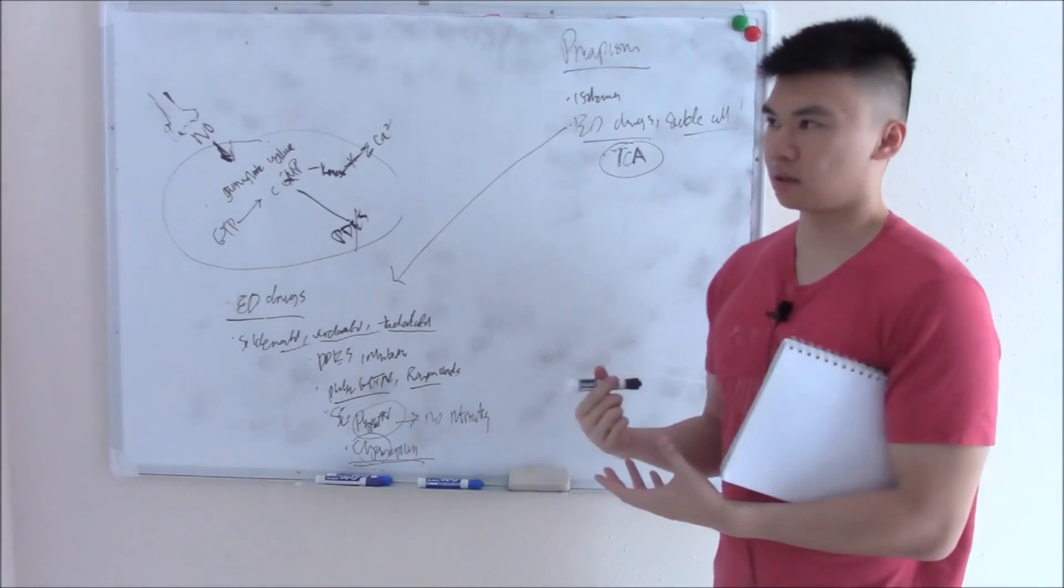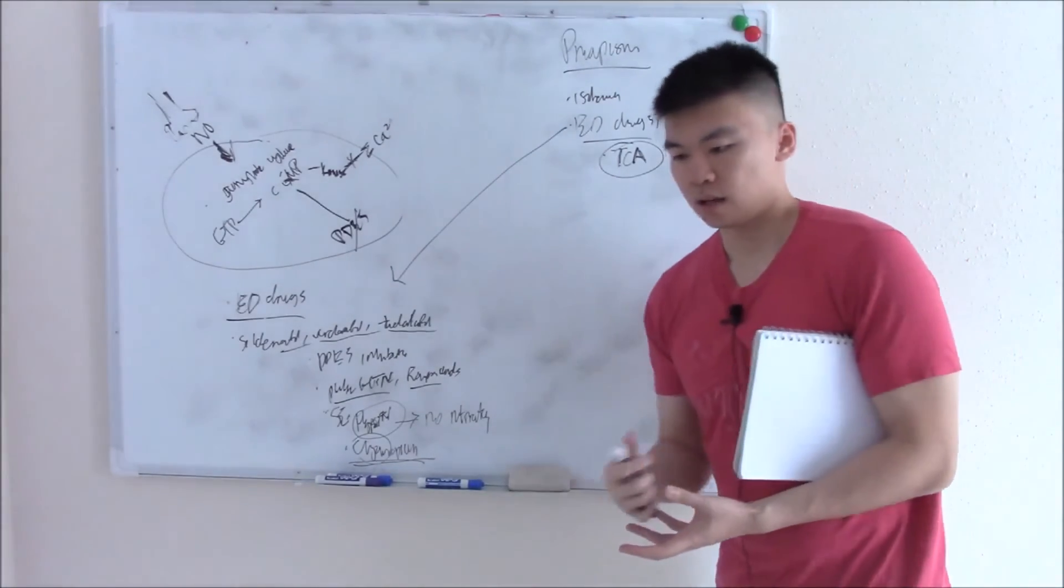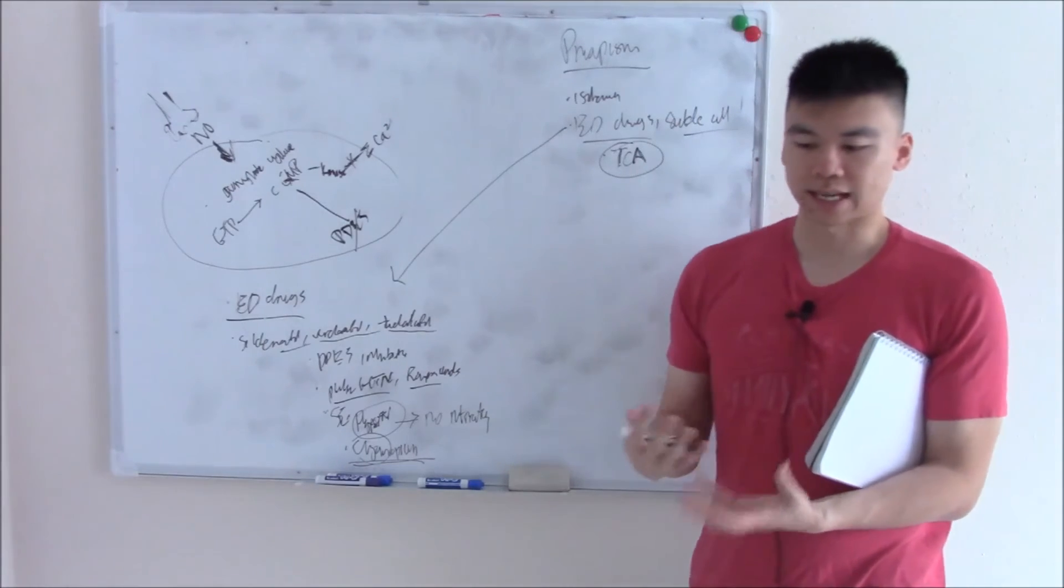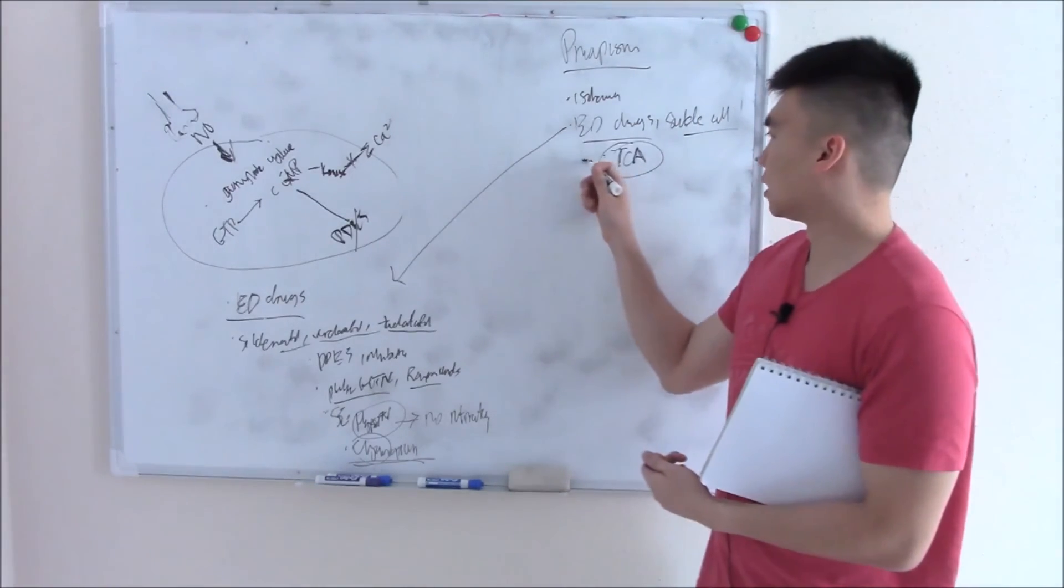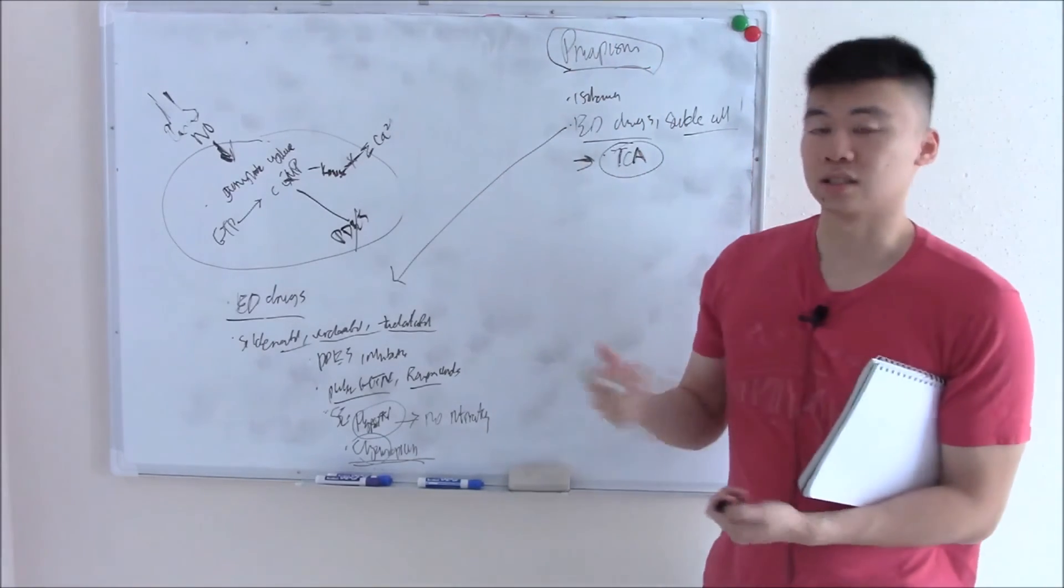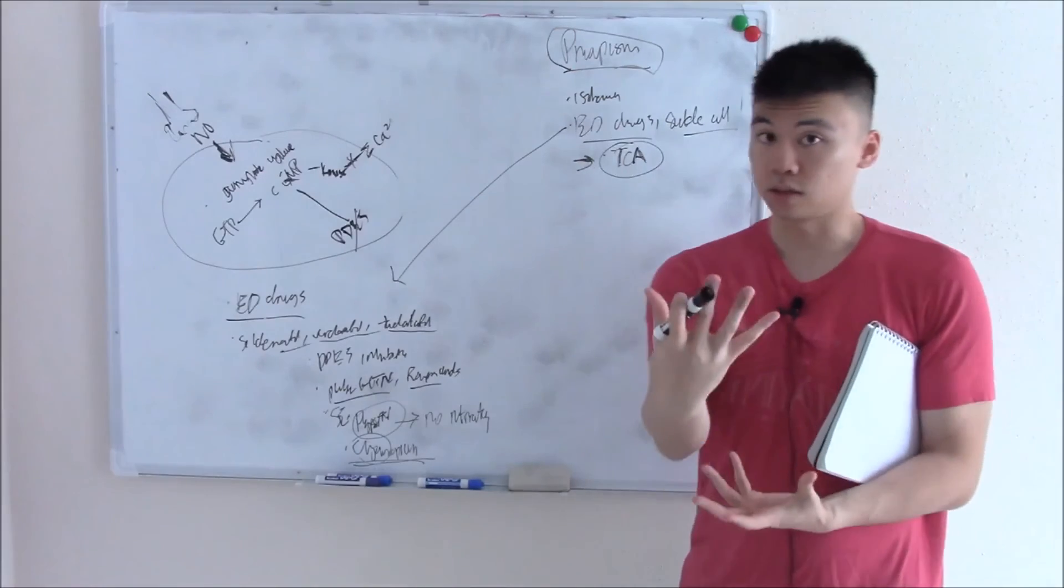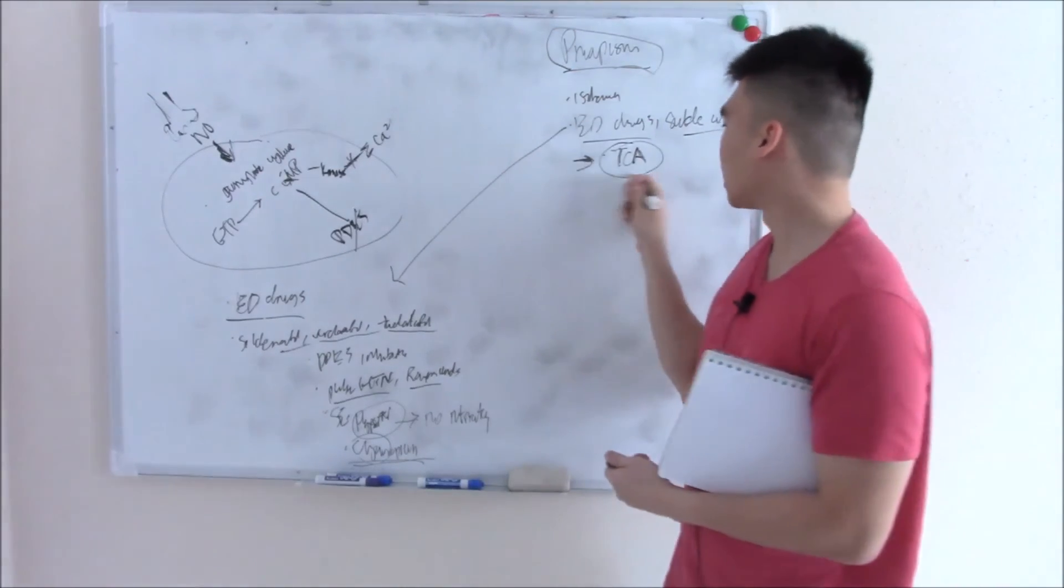TCAs aren't regularly used for antidepressants so much anymore, but I guess you can ask a question about a patient that's coming in with psychiatric history or symptoms and then they take a drug and then develop long lasting painful erection. That'd be a way to ask it. And now you can recognize it more easily now that we've talked about it here. So know that TCAs can cause it.